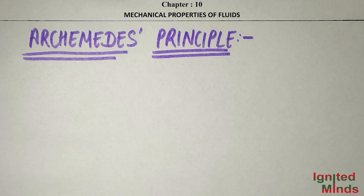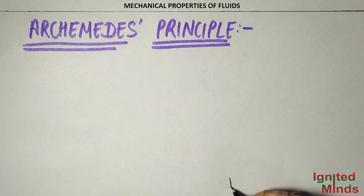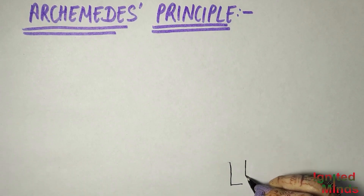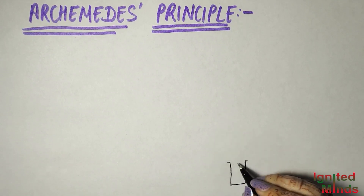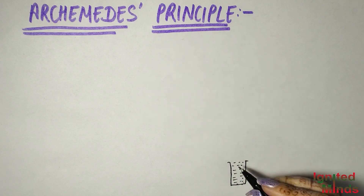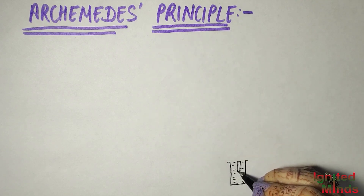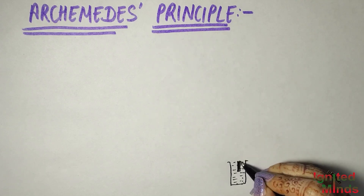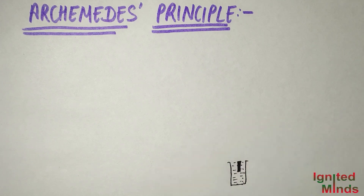So let's start with the new topic, Archimedes Principle. This is what we have studied in the 10th chapter. What is it called in simple language? If I tell you that a glass of water should be filled up to the top and you add a pen into it.